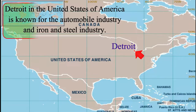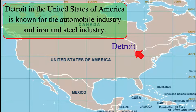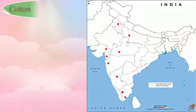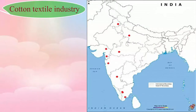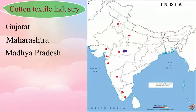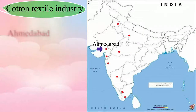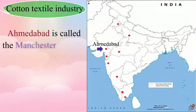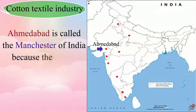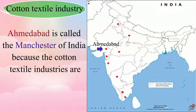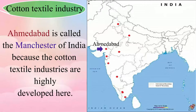Detroit in the United States of America is known for the automobile industry and iron and steel industry. In India, cotton textile industries are established in Gujarat, Maharashtra, Madhya Pradesh, Uttar Pradesh, Tamil Nadu, Karnataka, and Punjab. Ahmedabad is called the Manchester of India because the cotton textile industries are highly developed here.